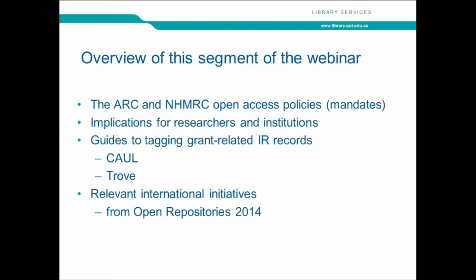In this presentation I'll briefly look at the nuts and bolts of the ARC and NHMRC policies on open access, then discuss the implications for researchers and institutions. I'll look at a couple of guides to tagging grant-related records, including the CAUL guide I was involved in putting together. I was also pleased to see that Trove, the National Library, have put together a guide to the technical side of tagging grant-related publications. And I'll briefly mention some funder-mandated publication issues that came up at Open Repositories in Helsinki.